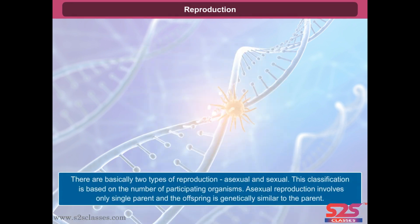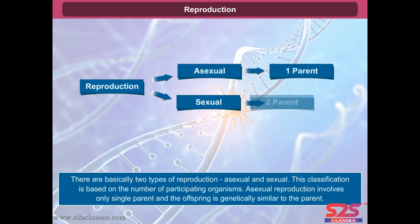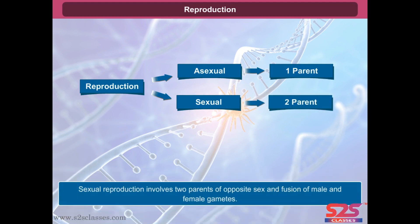There are basically two types of reproduction, asexual and sexual. This classification is based on the number of participating organisms. Asexual reproduction involves only a single parent, and the offspring is genetically similar to the parent. Sexual reproduction involves two parents of opposite sex and fusion of male and female gametes.